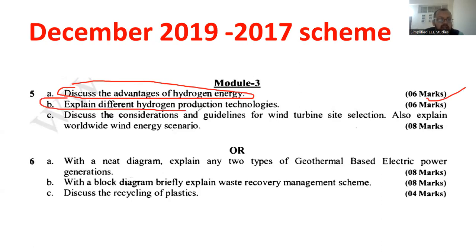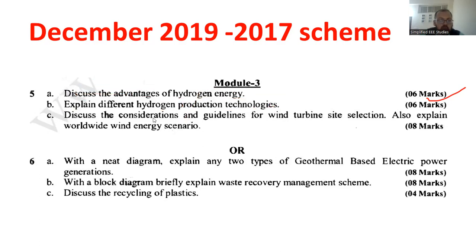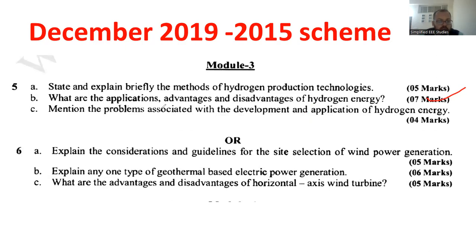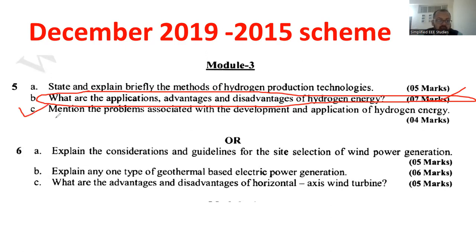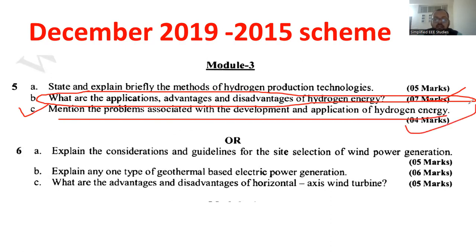Also, the repeated question: explain the different hydrogen production technology. I hope you got to know which questions you ought to focus more on — from this question paper it is very clear. Moving on to the last set: what are the applications, advantages and disadvantages of hydrogen energy, which carries 7 marks. Apart from that, mention the problems associated with the development and application of hydrogen energy, which is having the weightage of 4 marks. That is 7 plus 4, which is 11 marks you will be getting from hydrogen energy in this particular scheme.